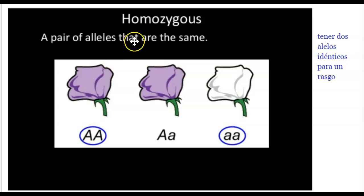Homozygous. Homo in science means the same. So here, a pair of alleles that are the same. This one is homozygous, two capital A's, majuscula. This one is homozygous also, two small a's, lowercase a's. This one is homozygous, and this one is homozygous.